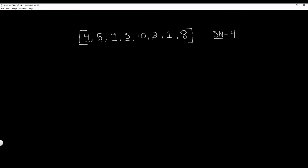Is 3 smaller than 4? Yes it is, so what we do from here is update our smallest number variable to this new smallest number, 3. We update it and say smallest number is equal to 3. Then we carry on — we go to 10. Is 10 smaller than our smallest number? No it's not.